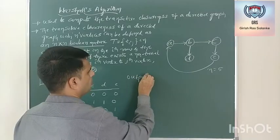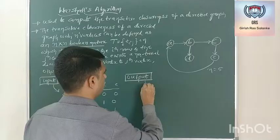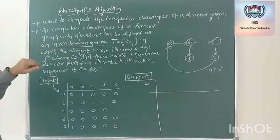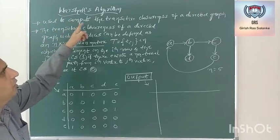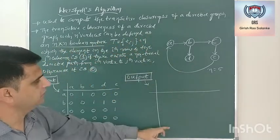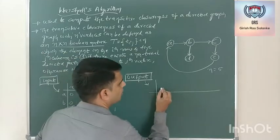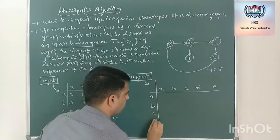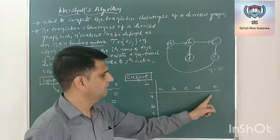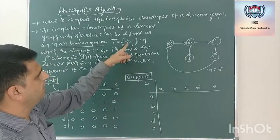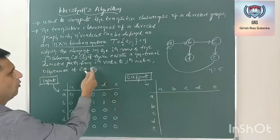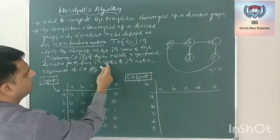Now, what should be the output? The output has to be an adjacency matrix — an n cross n boolean matrix. The transitive closure of a directed graph with n vertices can be defined as an n cross n boolean matrix denoted with T, where each element Tij — the element in the ith row and the jth column — may either be 1 or 0. It will be 1 if there exists a non-trivial directed path from the ith vertex to the jth vertex.